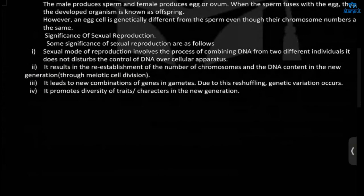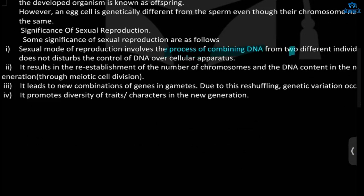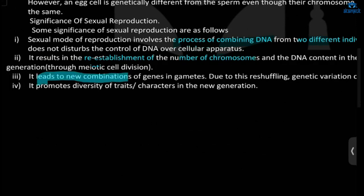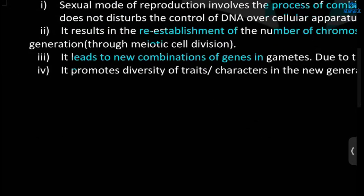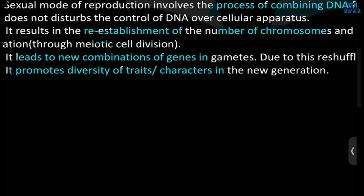What is the significance of sexual reproduction? It involves the process of combining DNA from two different individuals. It also re-establishes the number of chromosomes and leads to new combinations of genes in the gametes. Because of this, it promotes diversity of traits or characters in the new generation.